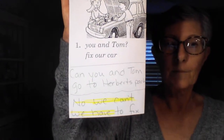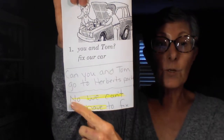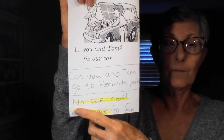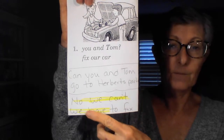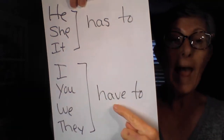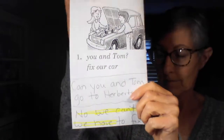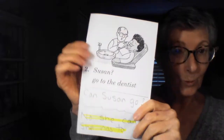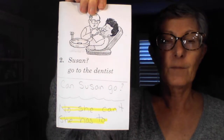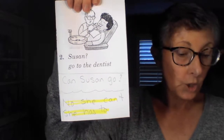Number one: Can you and Tom go to Herbert's party? It's 'you and Tom,' so the answer uses 'we.' No, we can't. We have to fix our car. The obligation is: we have to fix our car.